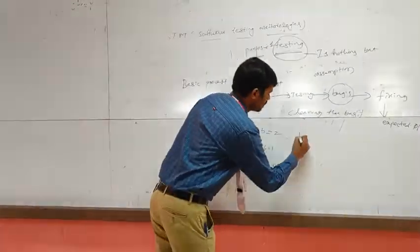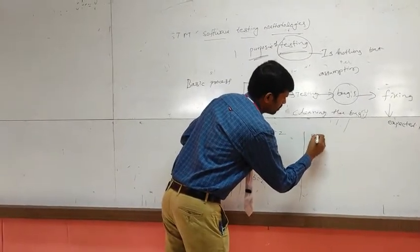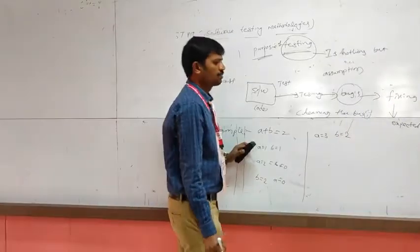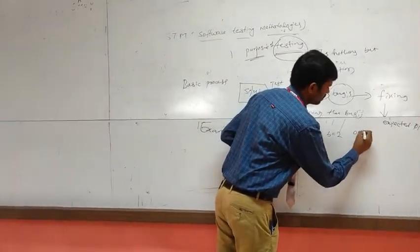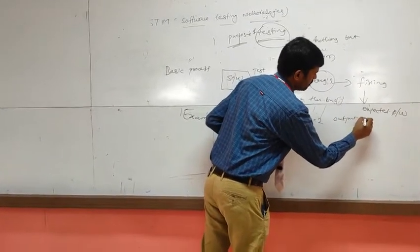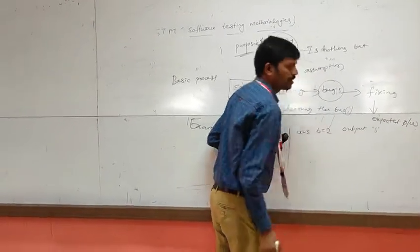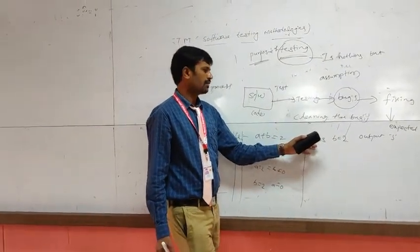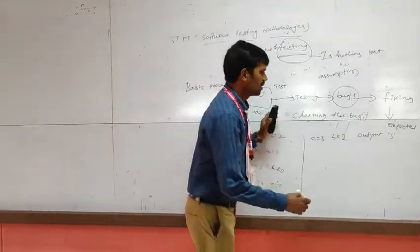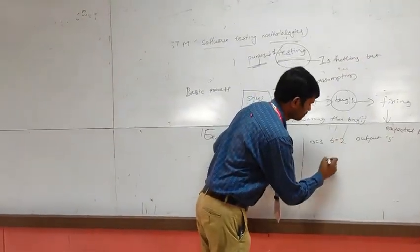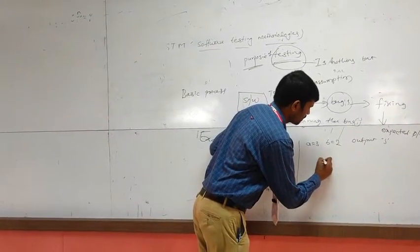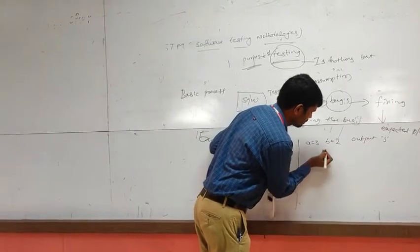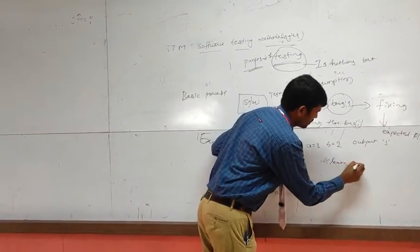Bugs means: if a equals 3 and b equals 2, the output is 5 — that means bugs will come. So we have to clear those bugs, and for that we use debugging. Debugging means clearing the errors.